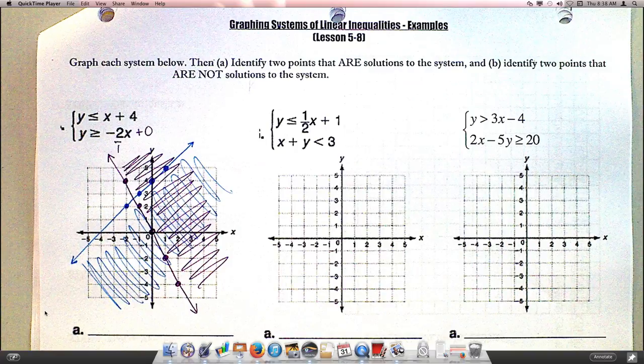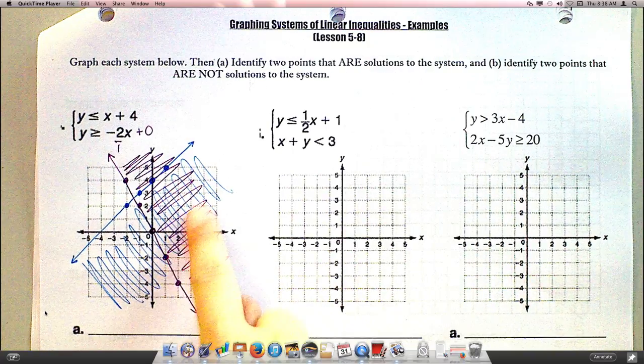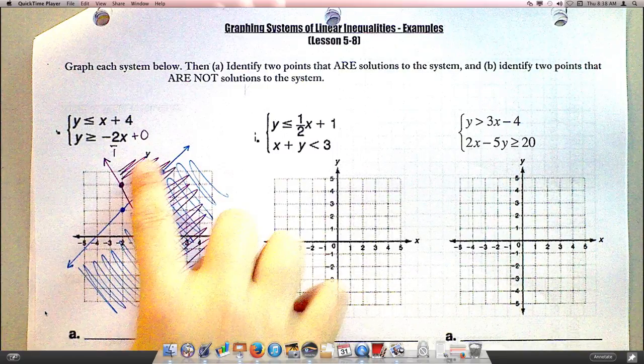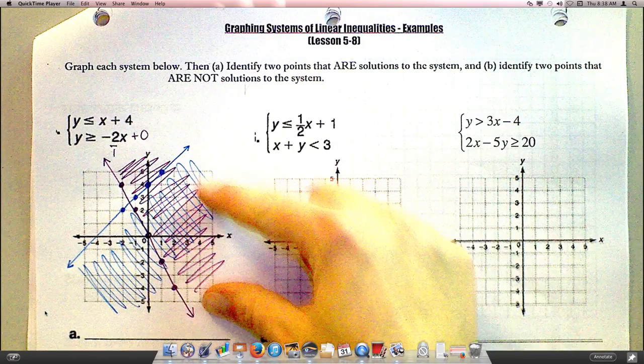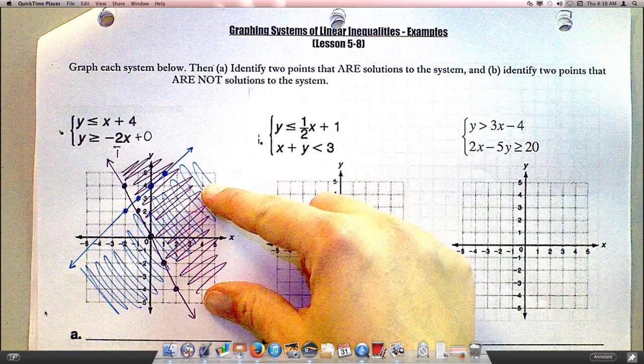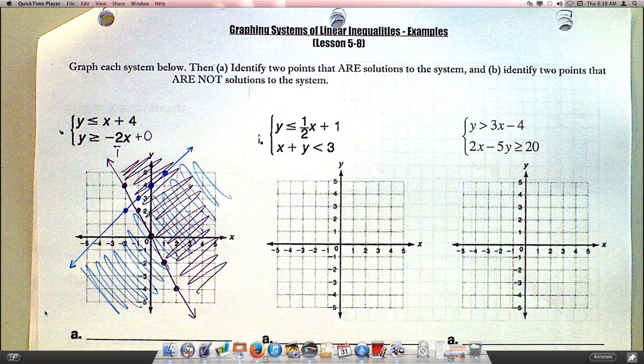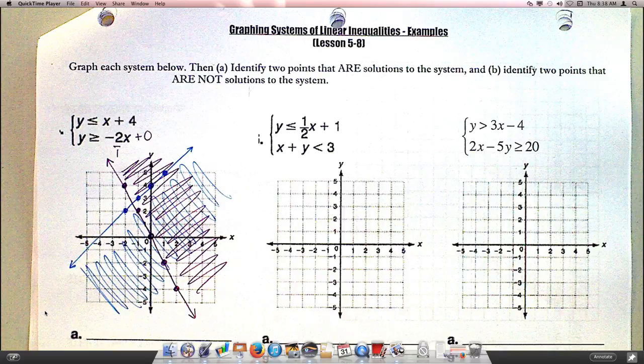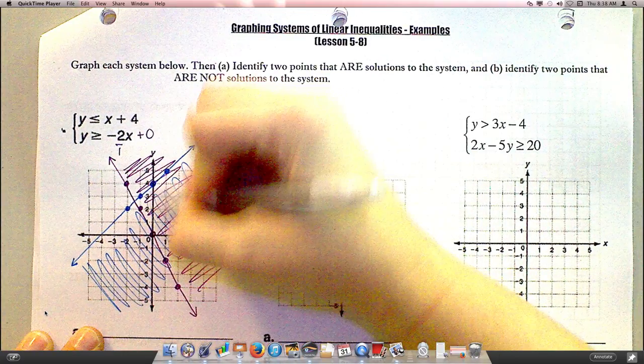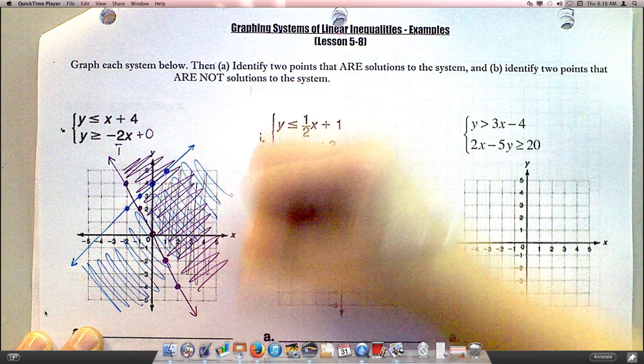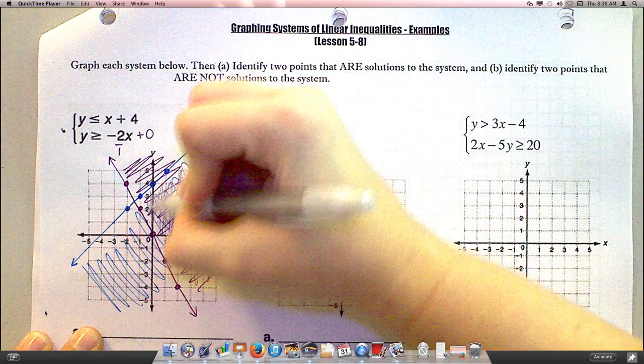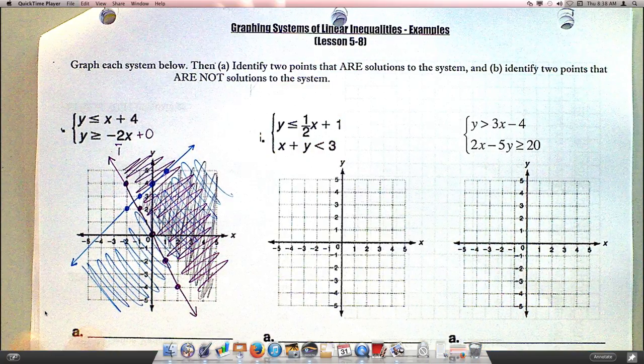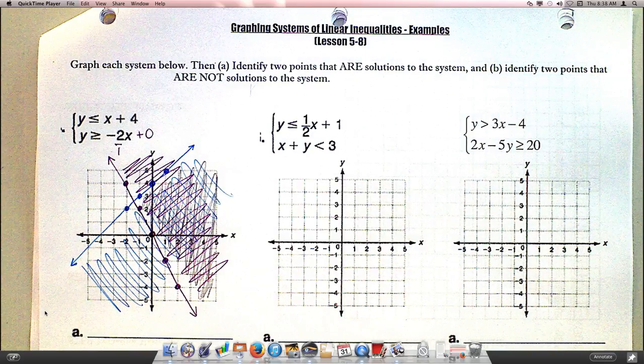So when this happens, when you have the two lines crossed, you end up with like four areas. If you think of like an X, you always have four pieces. One of those pieces is going to be shaded twice. That's where your answer is. So a lot of the times I'll go back with my pencil and kind of darken in that area just to show that this is the area that is my answer, because that's where it's double shaded.